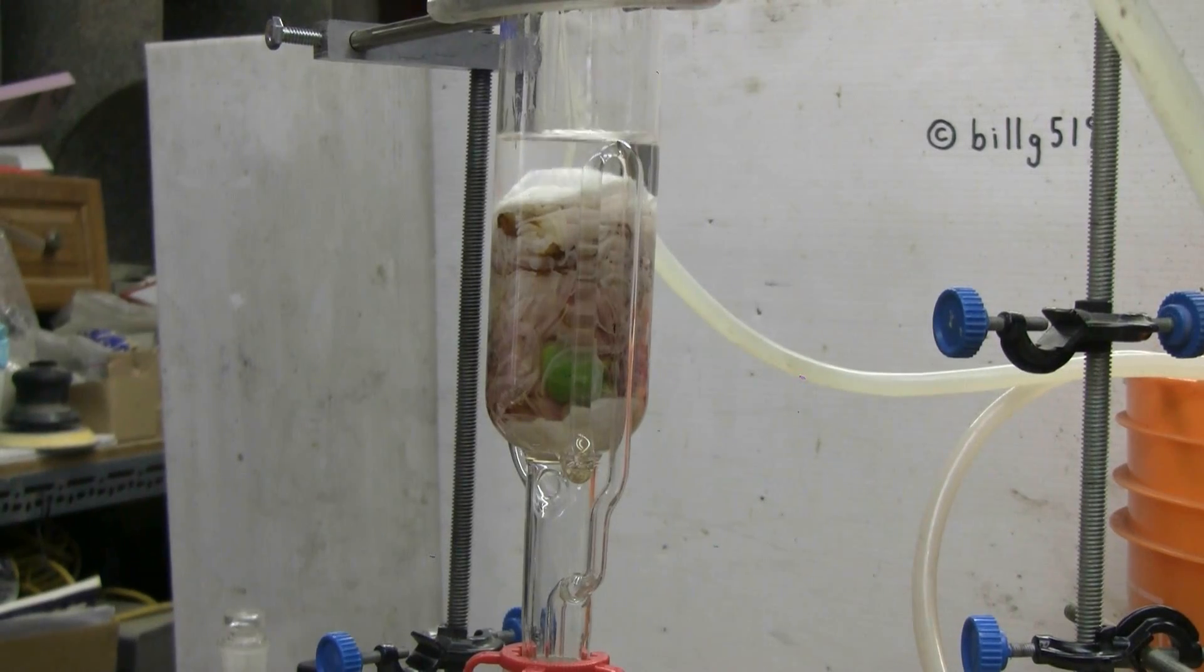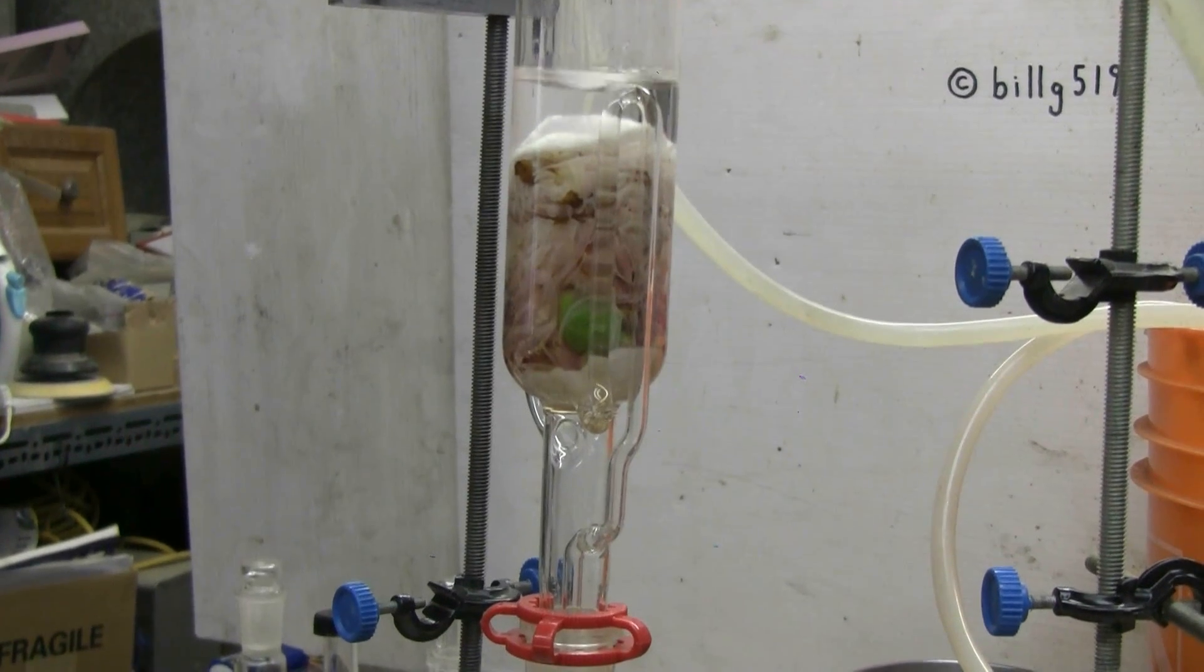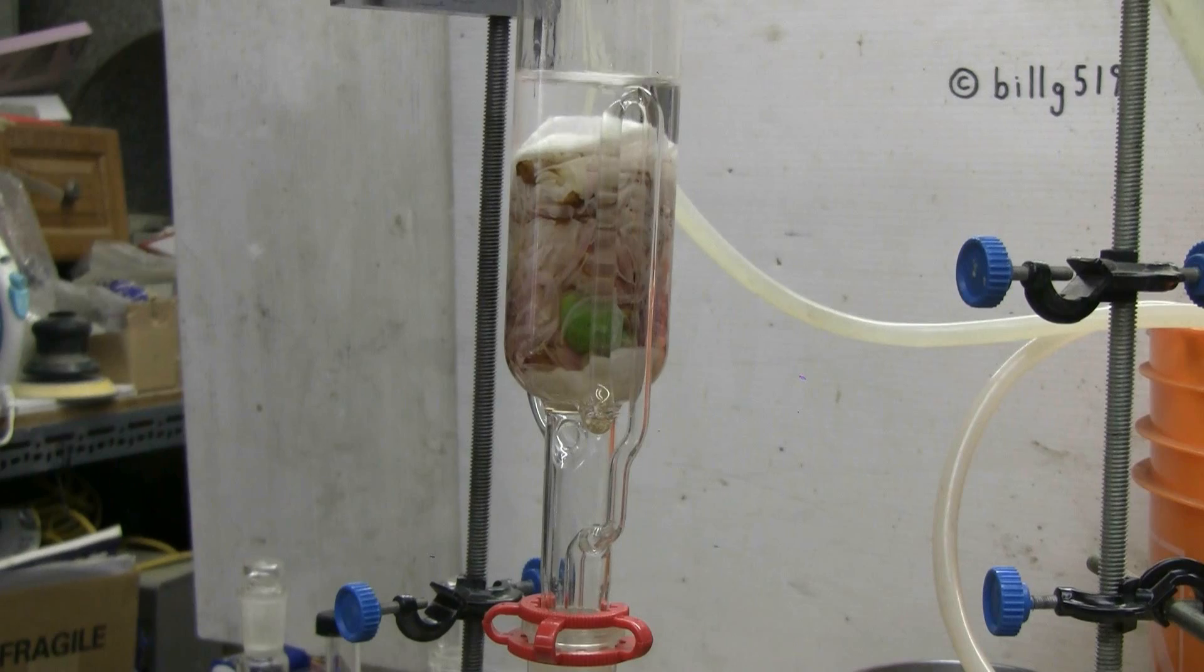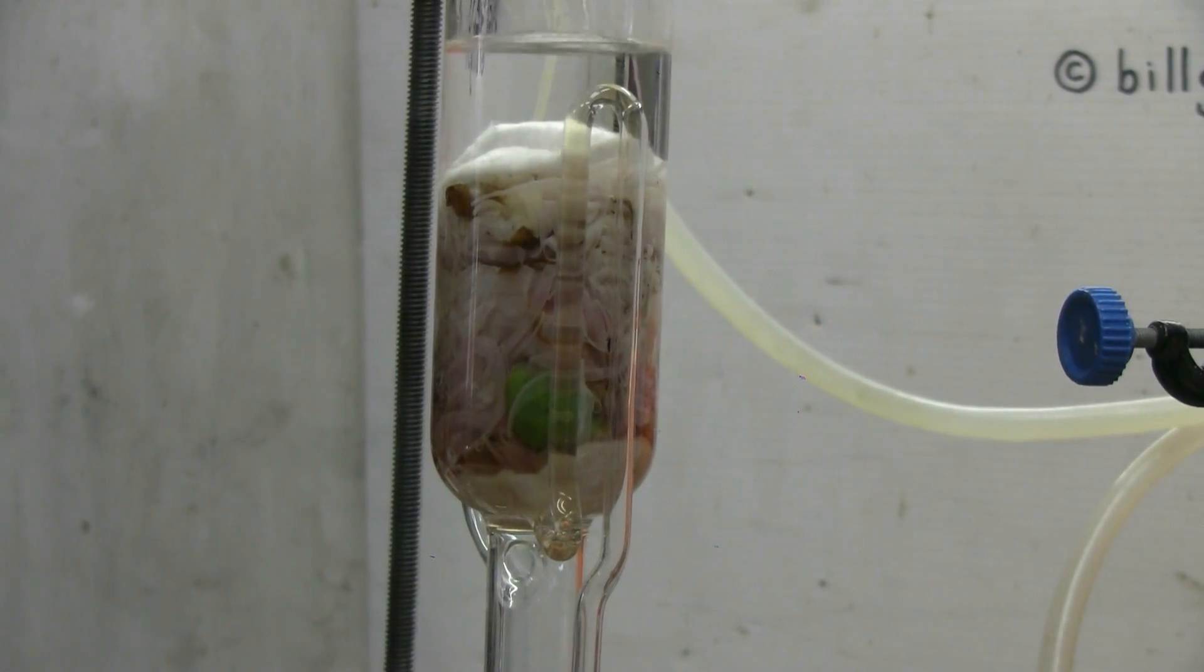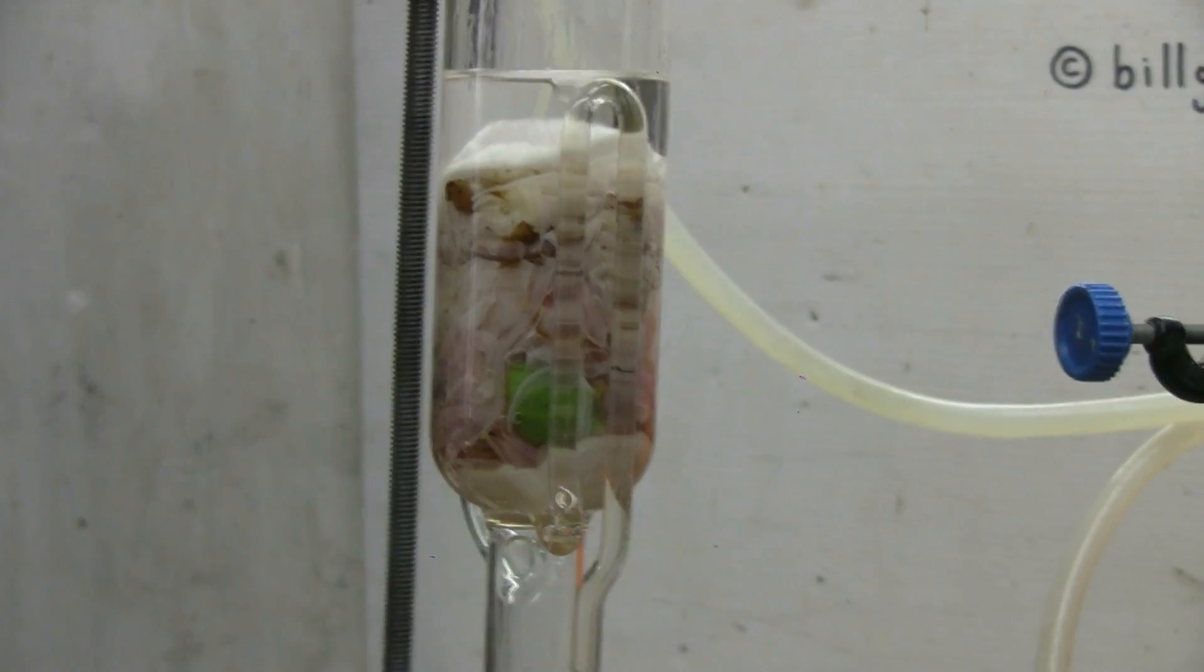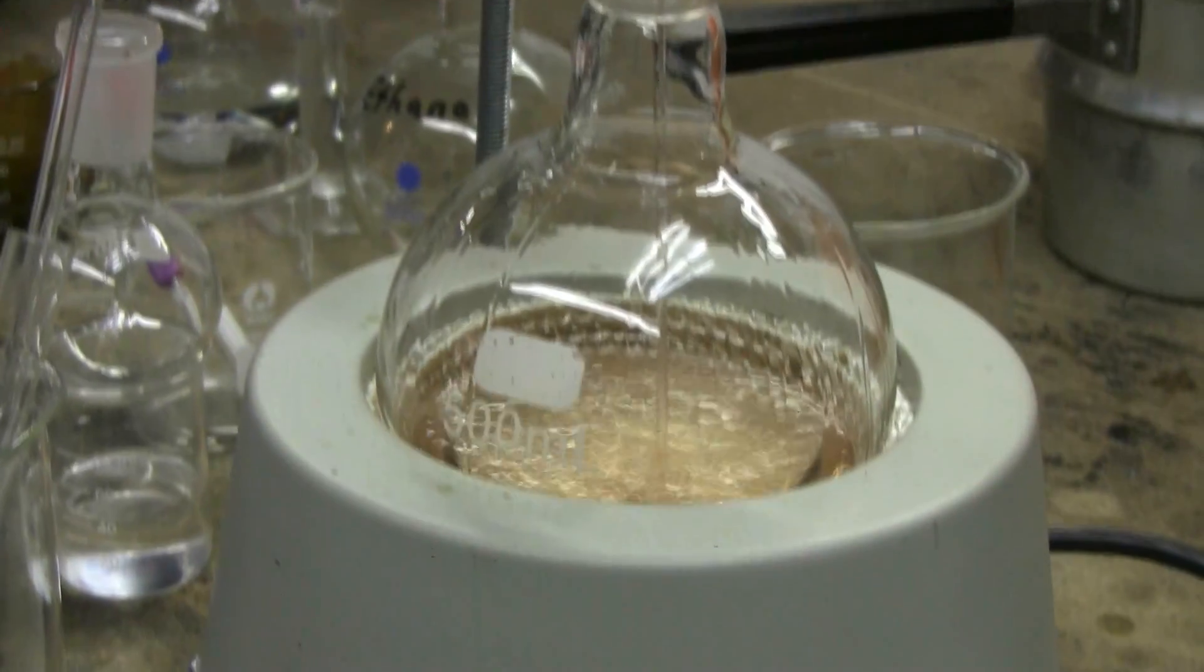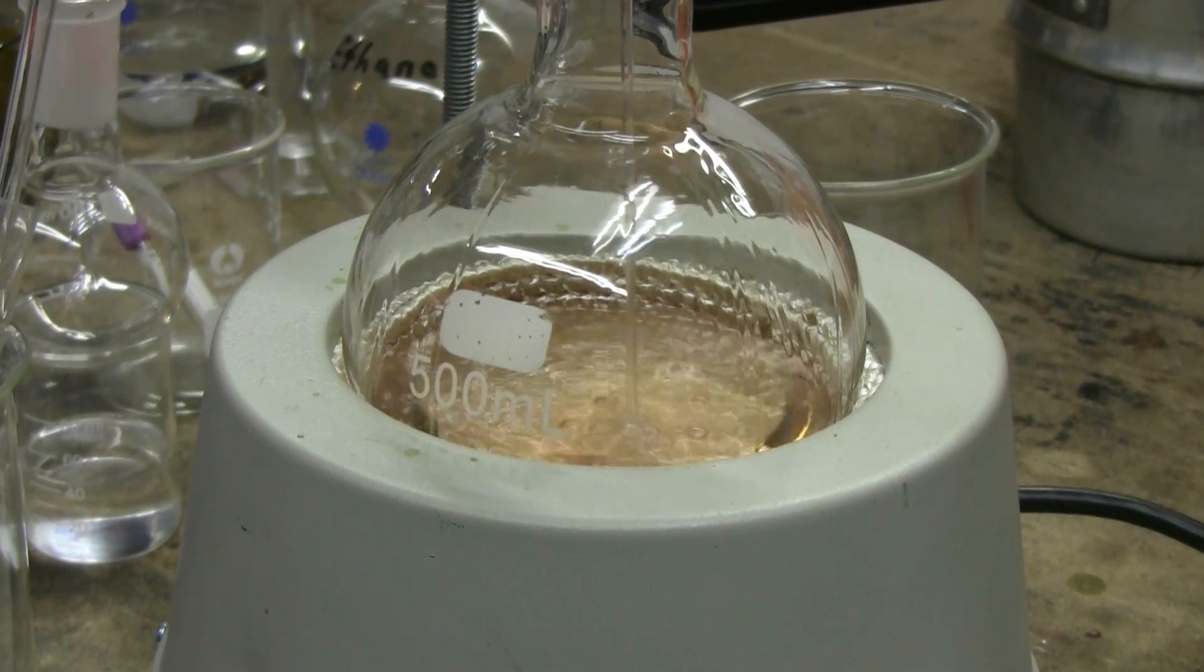Cycle number one of the Soxhlet extraction of peony flowers, this time with ethanol, is about to siphon. There goes cycle number one.